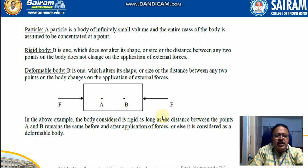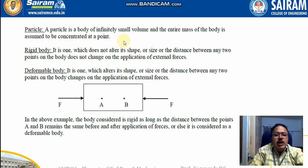Now the basic idealizations — these are the fundamental definitions in the study of engineering mechanics. A particle is a body of infinitely small volume, where the entire mass of the body is assumed to be concentrated at a point. Since a particle is a point, the volume of the body is very negligible and can be ignored.